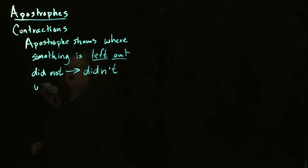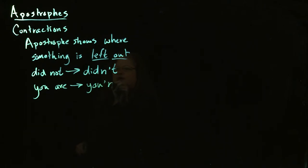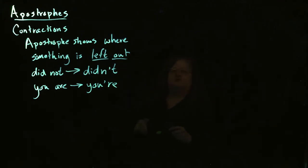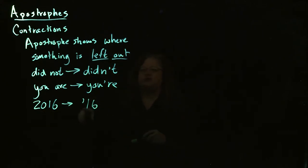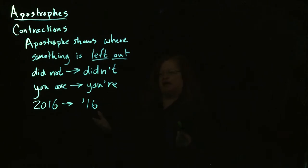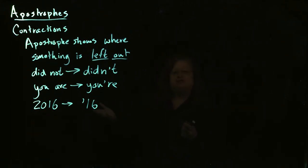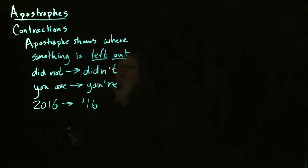Another example: if you want to say 'you are,' that will condense into Y-O-U apostrophe R-E. In this case, the apostrophe is showing that the A has been left out. This works for numbers too. If you're talking about the year and you want to talk about 2016, you can write apostrophe 16, where the apostrophe shows those first two digits are left out. The apostrophe needs to come before the number — if you put the apostrophe after, that's the symbol for feet, so you'd be saying 16 feet instead of the year. So that's contractions: a very simple rule — just remember the apostrophe goes where something is left out.